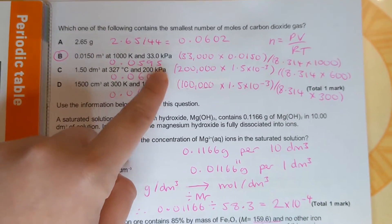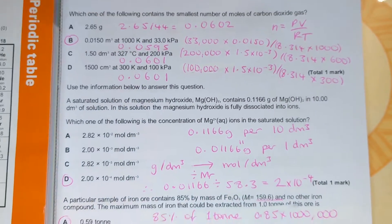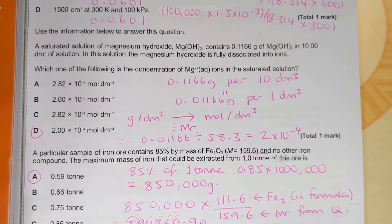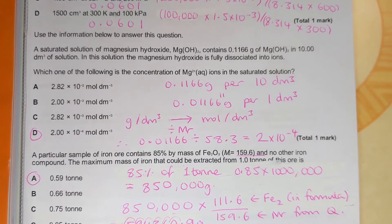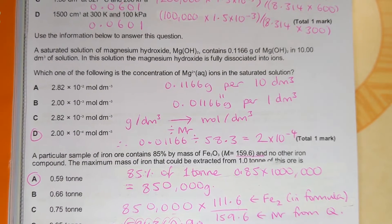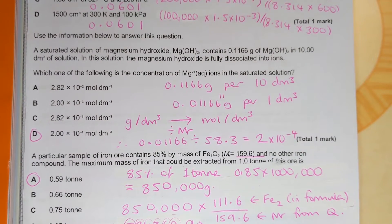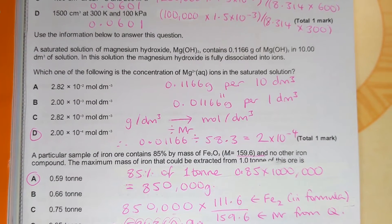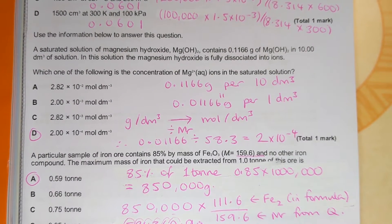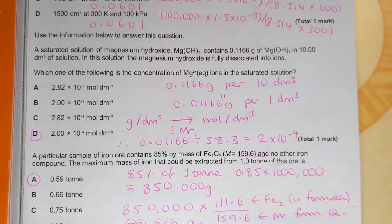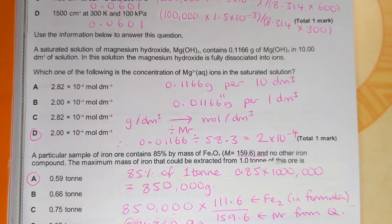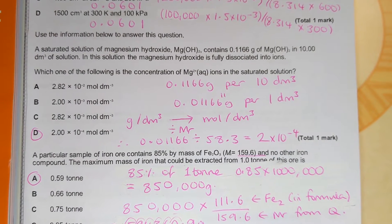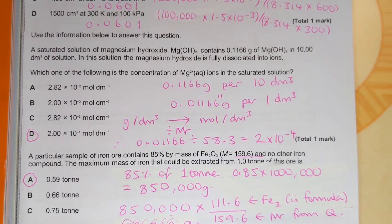The next one it says a saturated solution of magnesium hydroxide contains 0.1166 grams of magnesium hydroxide in 10 decimeters cubed of solution. In this solution the magnesium hydroxide is fully dissociated. Which one of the following is the concentration of magnesium ions in the solution? There's a couple of ways you can work this out.